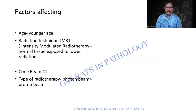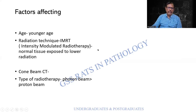What are the factors affecting radiation? One is age — younger age, strangely, because highly multiplying cells are more prone to radiation injury. The radiation technique, such as IMRT (intensity modulated radiotherapy), allows normal tissue to be exposed to a lower dose, though injury can still occur. Other factors include cone beam, type of radiotherapy, and the photon beam leading to proton beam.